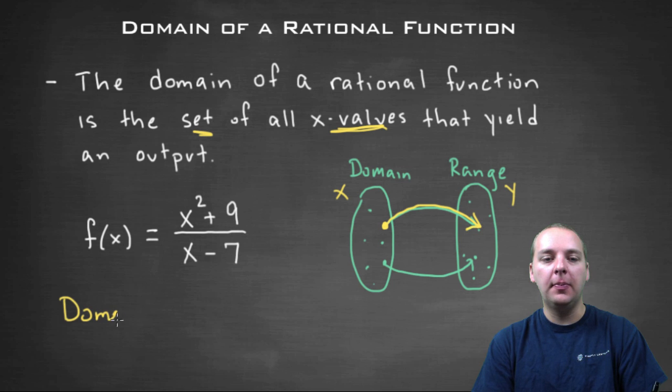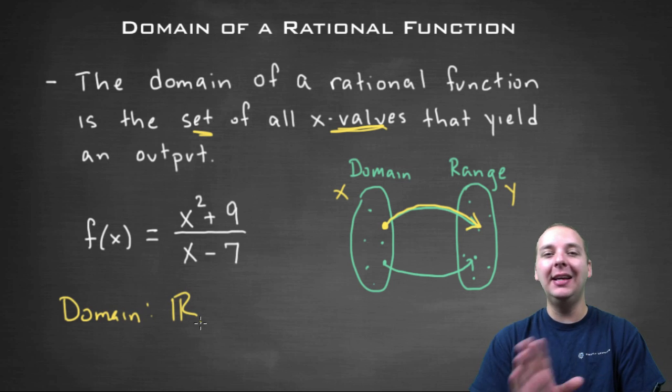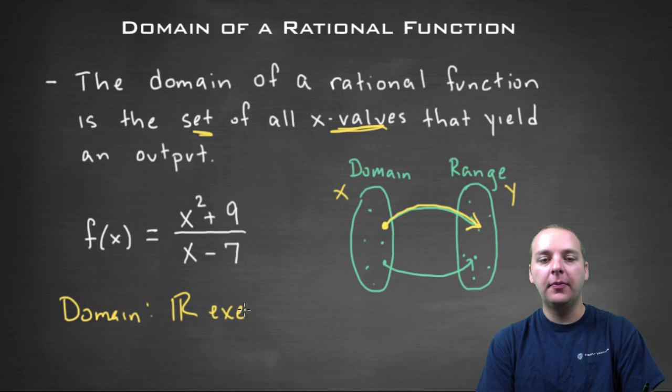So usually the domain looks something like this. Usually your domain would be something like all real numbers. You can plug in any x you want, except, like in this case, let's just look at this example here: x squared plus nine divided by x minus seven.